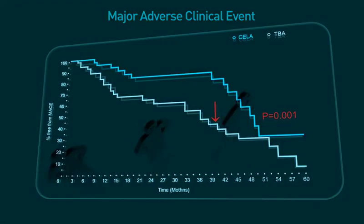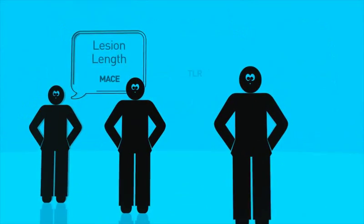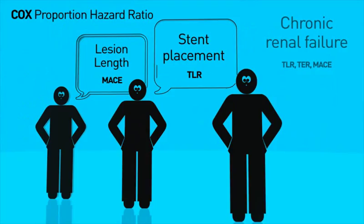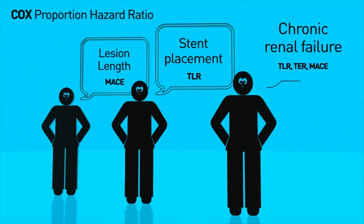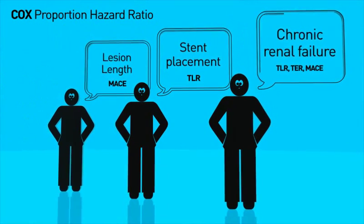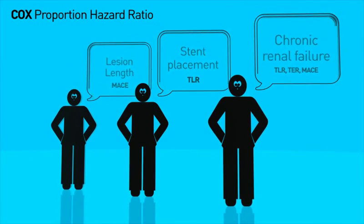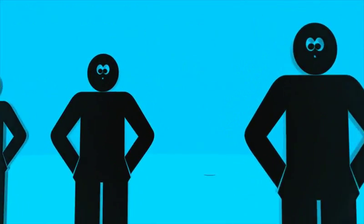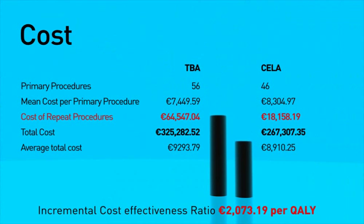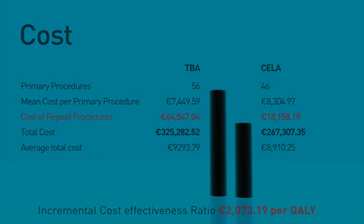Cox proportional hazard ratio showed that chronic renal failure, stent placement, and lesion length are the greatest predictors of TLR, TUR, and MACE. Laser proved to be significantly more cost-effective than TBA, with an incremental cost-effectiveness ratio exceeding €2,000 per QALY.